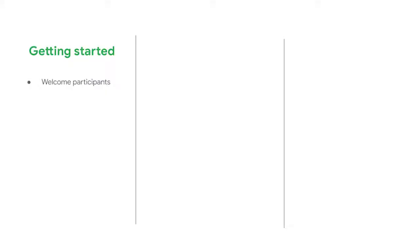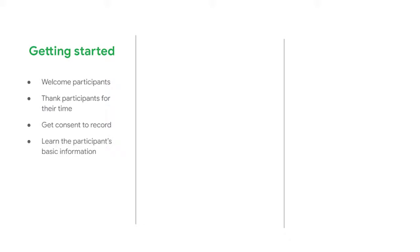So how do you actually write a script for a usability study? There are a few different parts. To get started, welcome participants to the study and thank them for their time. All usability studies should be recorded so your team can rewatch them later — you need to let the participant know you will record the study and ask for their consent to record. Then learn the participant's basic information like name, age, and occupation. It's also important to remind participants before the study begins that they are not being tested — the goal is to provide honest feedback about the prototype, and there are no right or wrong answers. Give participants the opportunity to ask questions before you jump into the study itself.